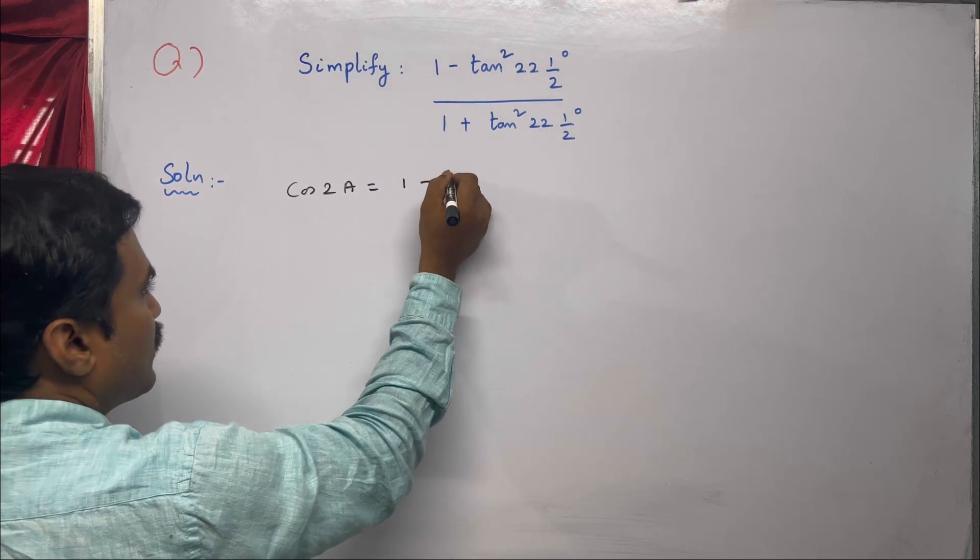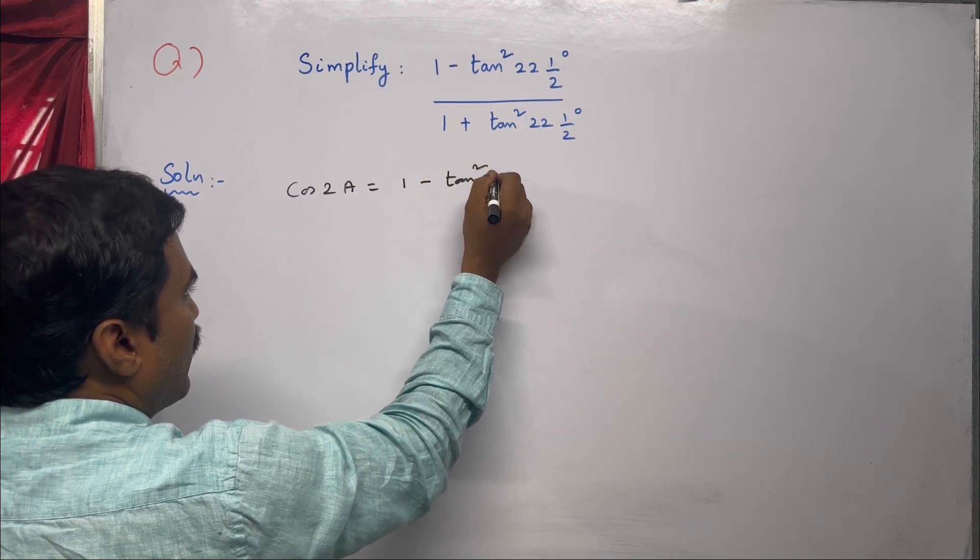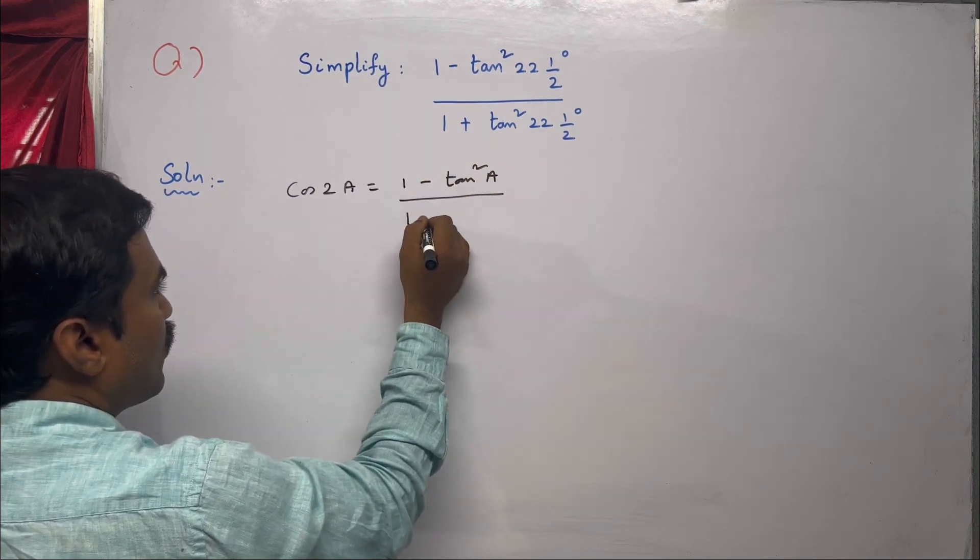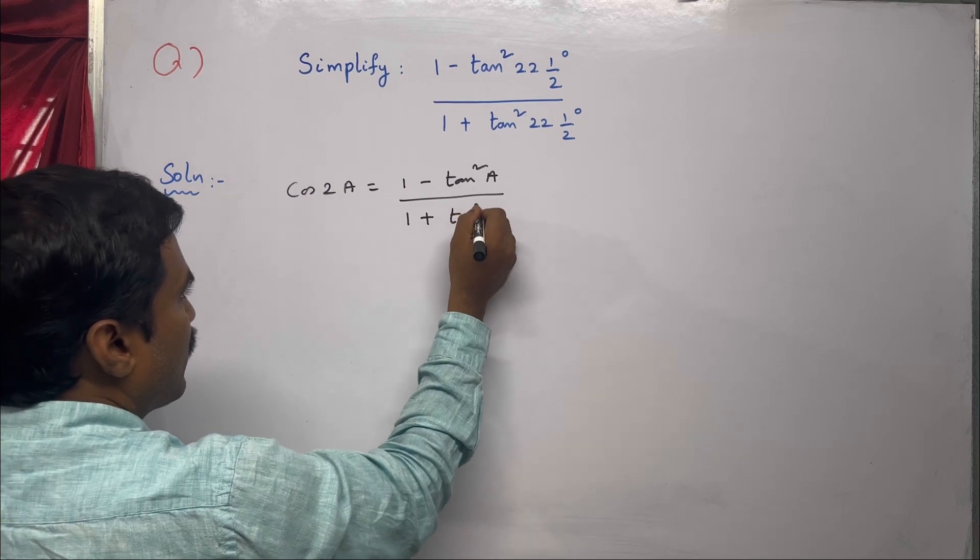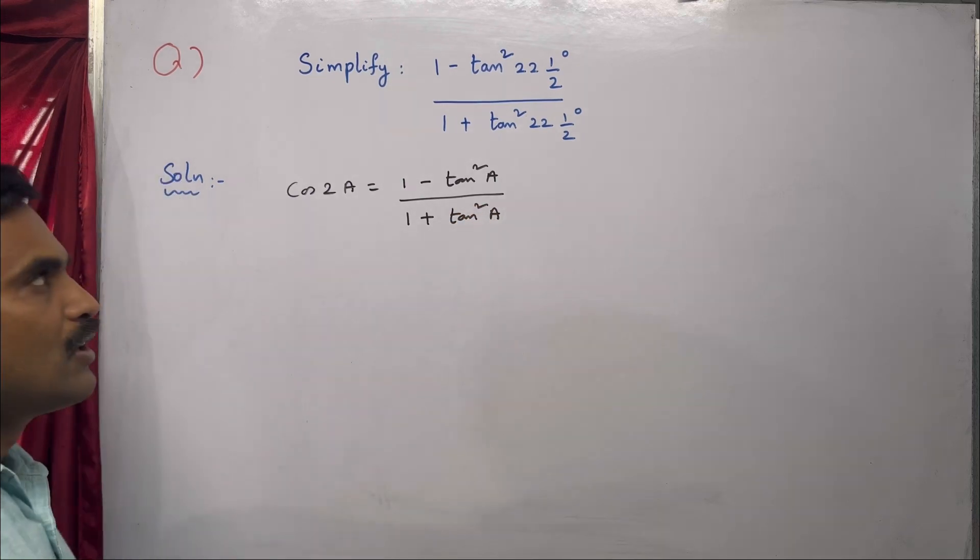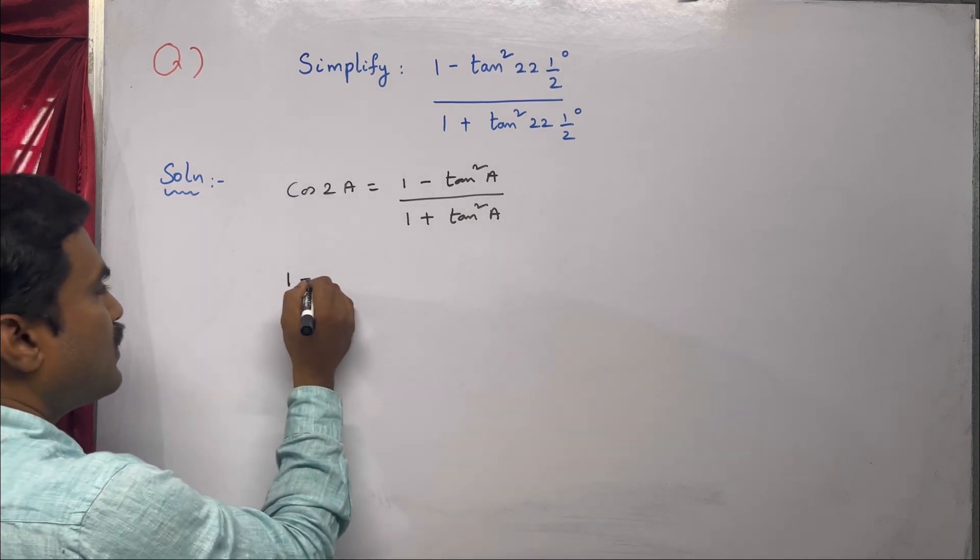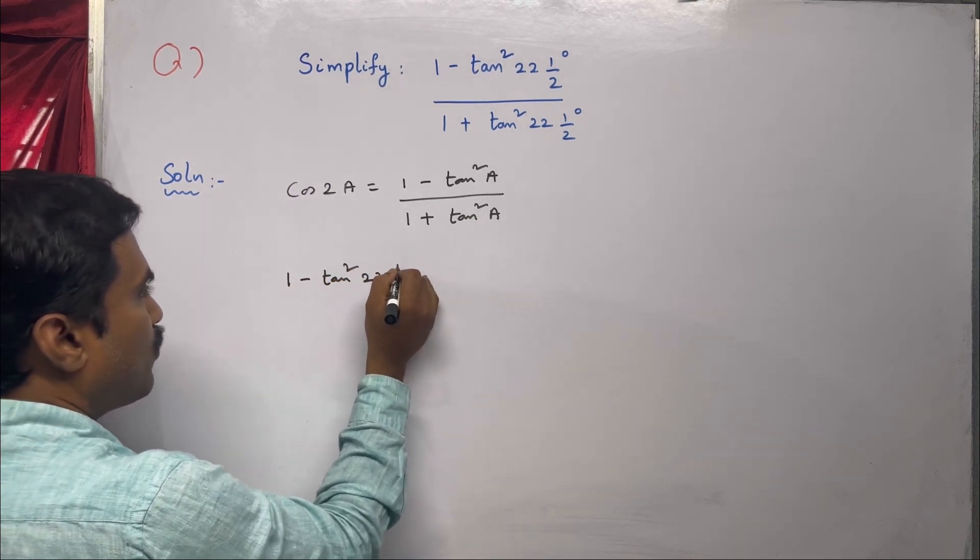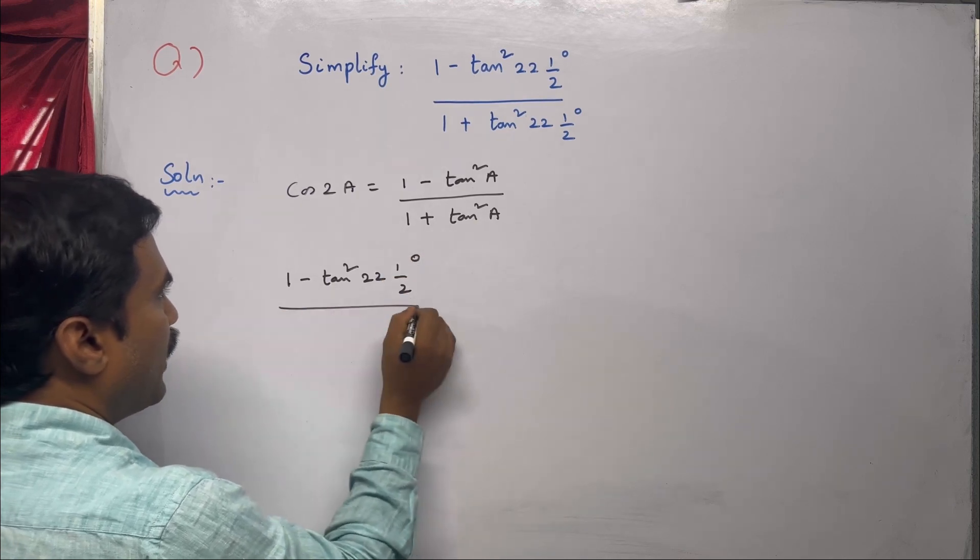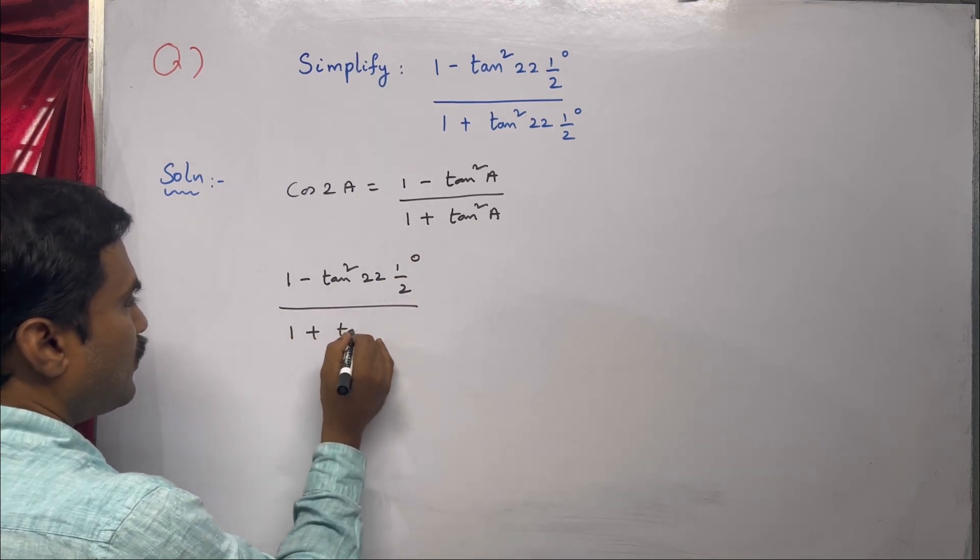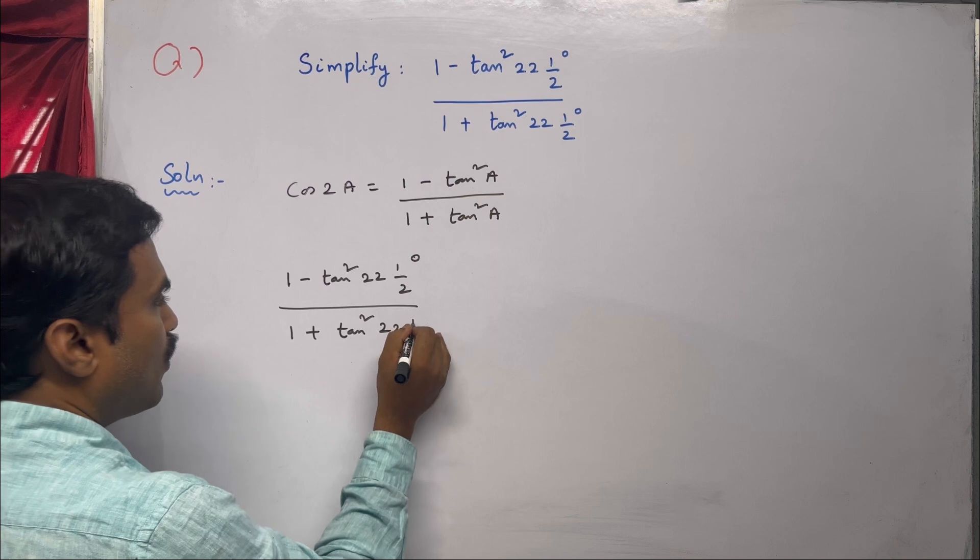So here the problem is given: 1 minus tan squared 22 and 1/2 degrees divided by 1 plus tan squared 22 and 1/2 degrees.